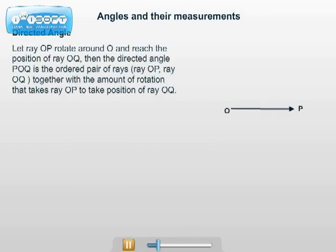Let the ray OP rotate around O and reach the position of the ray OQ. Then the directed angle POQ is the ordered pair of rays, ray OP and ray OQ, together with the amount of rotation that ray OP needs to take the position of ray OQ.